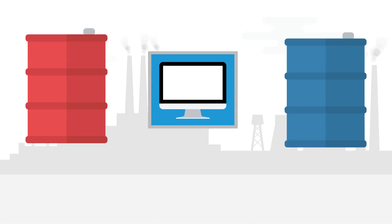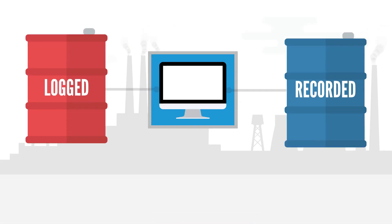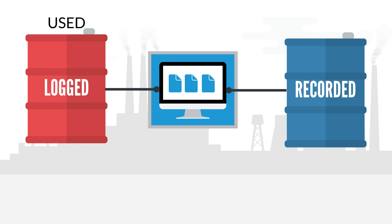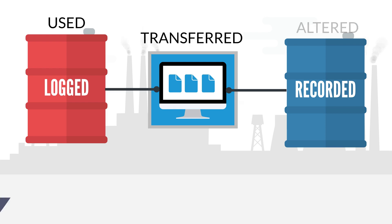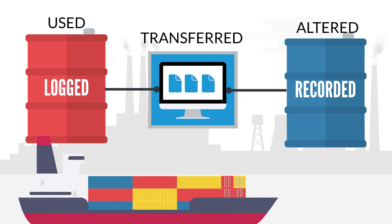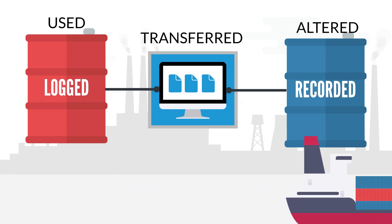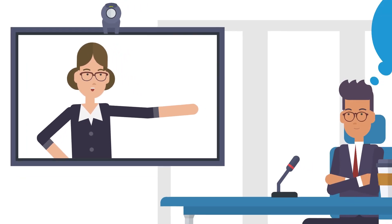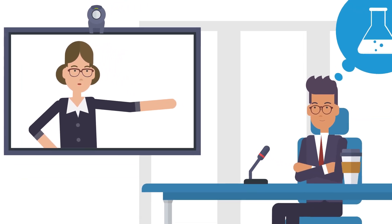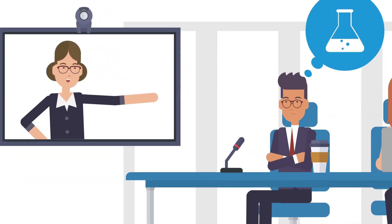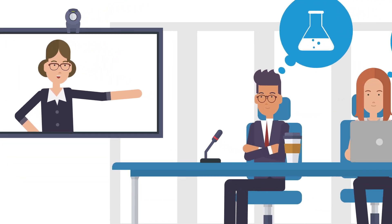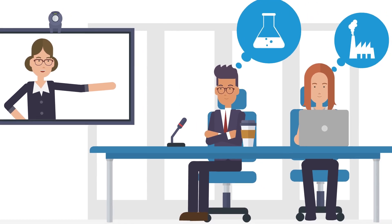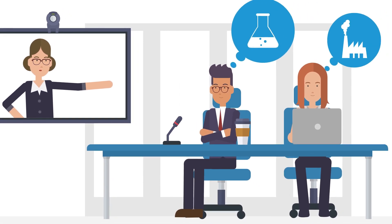Each event a container undergoes is logged and recorded through ERA's forms, such as when a container is used, transferred, altered, or shipped out as waste. Let's see how ERA's chemical management software can help environmental managers Anthony and Veronica keep track of chemicals at their facility.